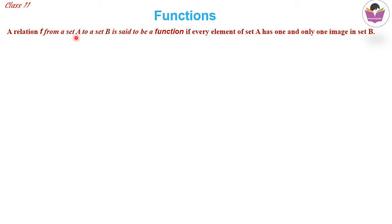A relation f from set A to set B is said to be a function if every element of set A has one and only one image in set B. If you take one particular element from set A, that element must be related to only one element in set B — then we can say it is a function.